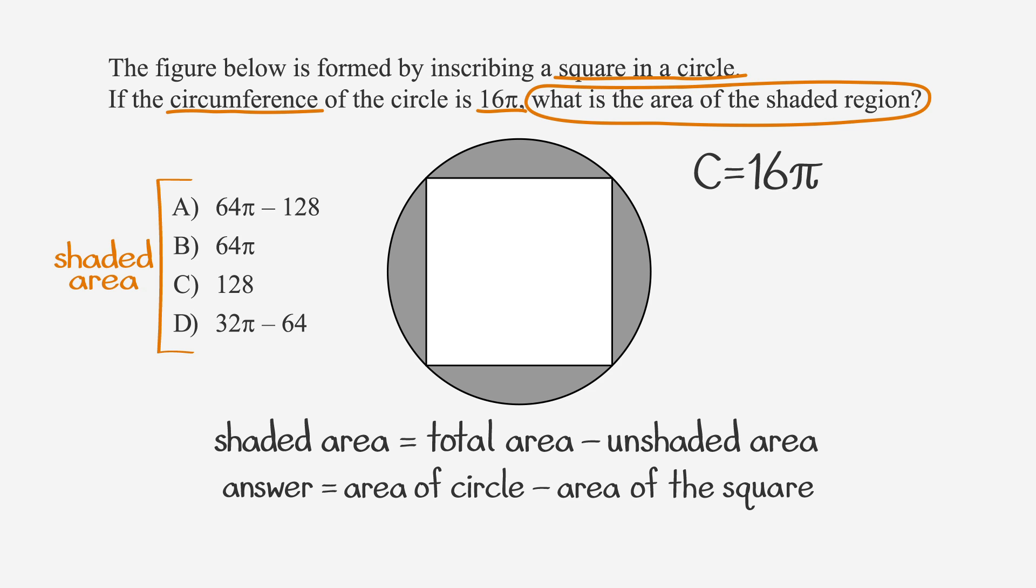Based on that, we can figure out the radius if we remember that the circumference, 16π, is equal to 2 times π times the radius. So if we solve for r by dividing both sides by 2π, we get that the radius of our circle is 8. Looking at our formula box, we see that the area of a circle is equal to π times the square of the radius. So, plugging in 8 for the radius, we get the area of this circle is equal to π times 8 squared, or 64π.